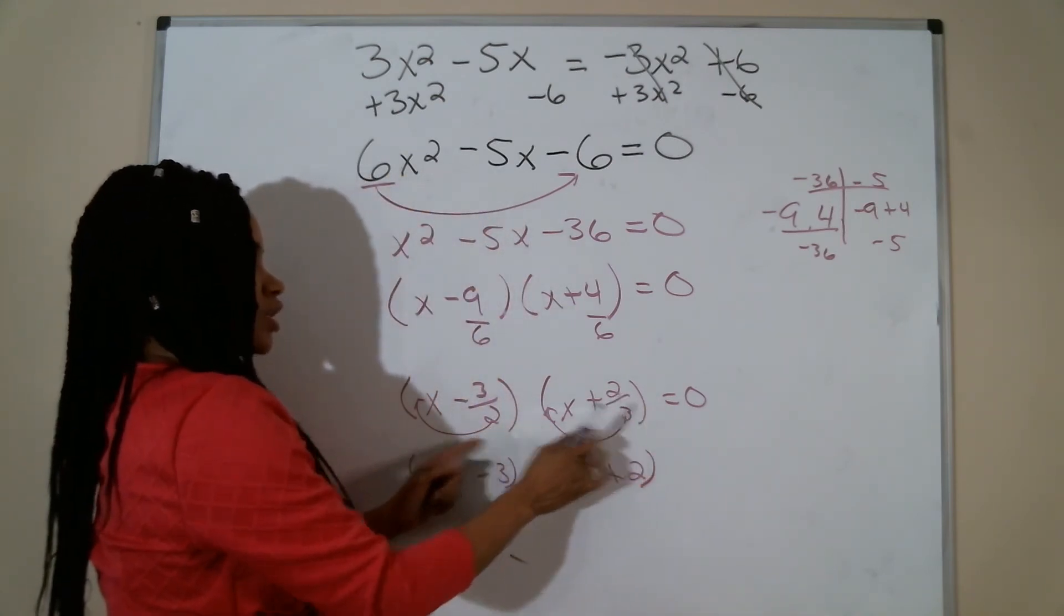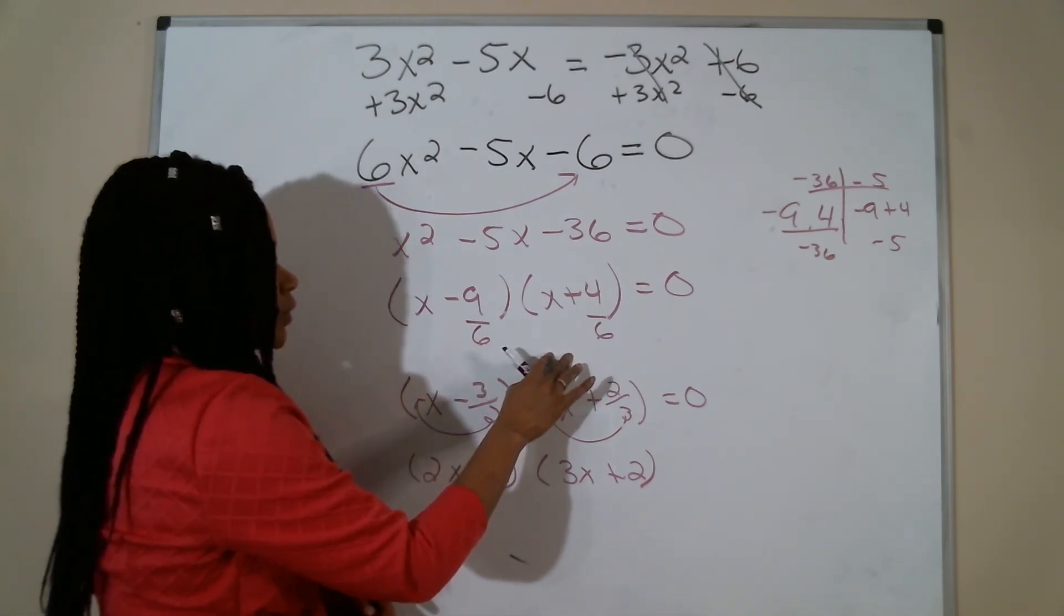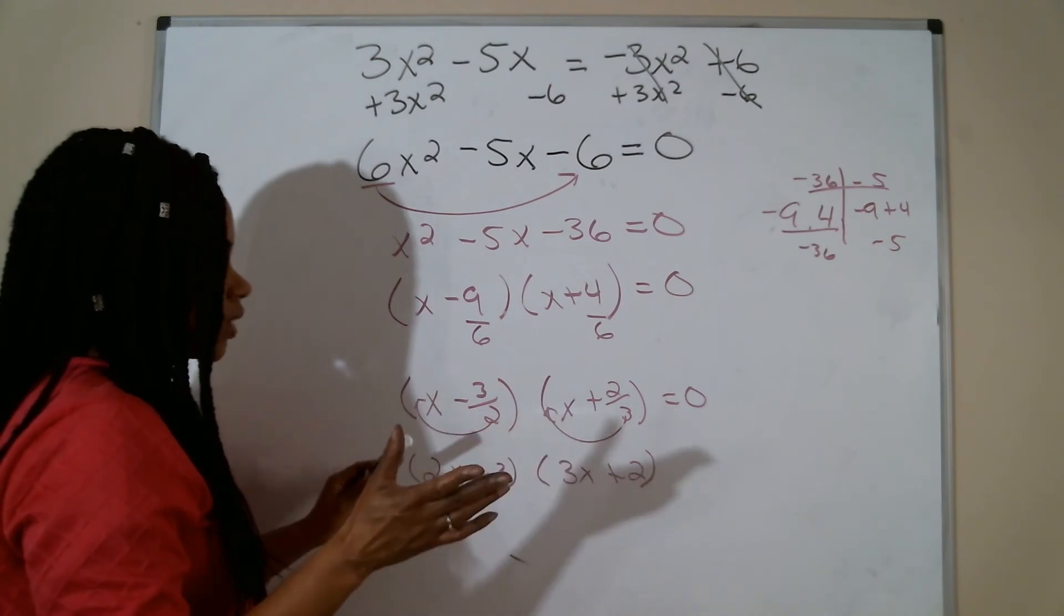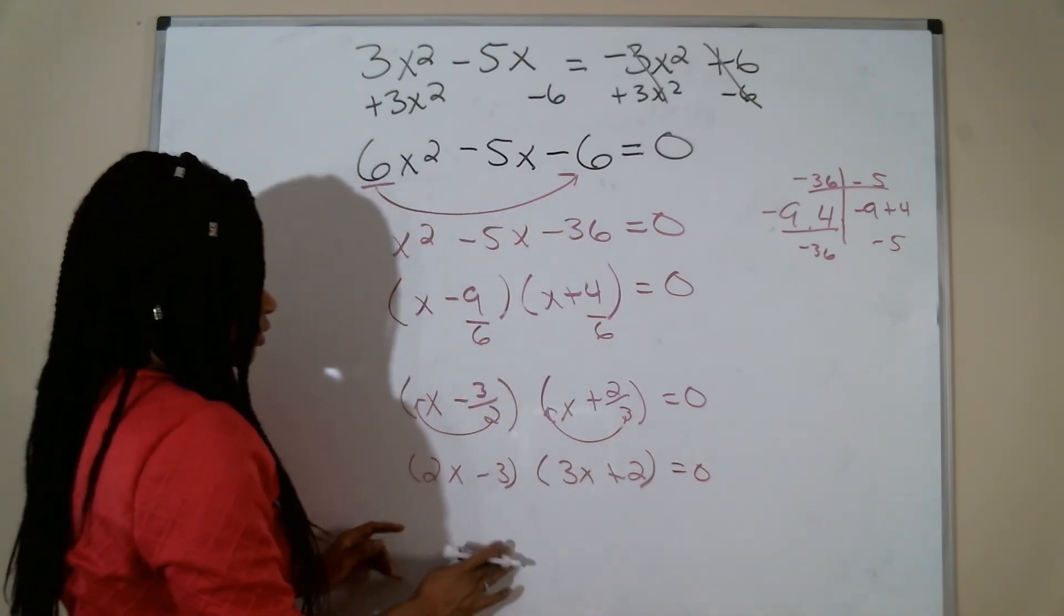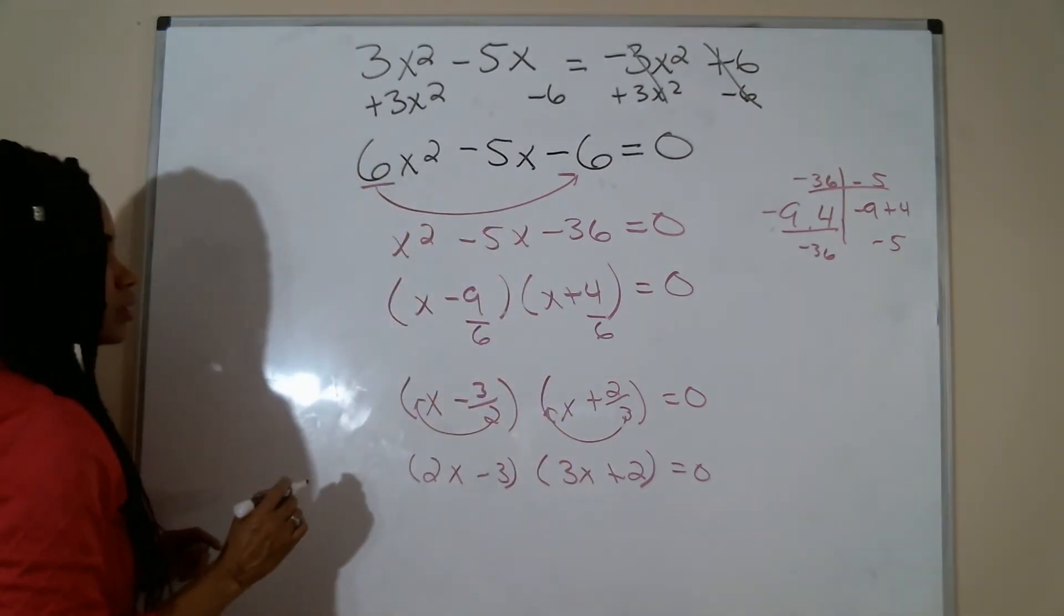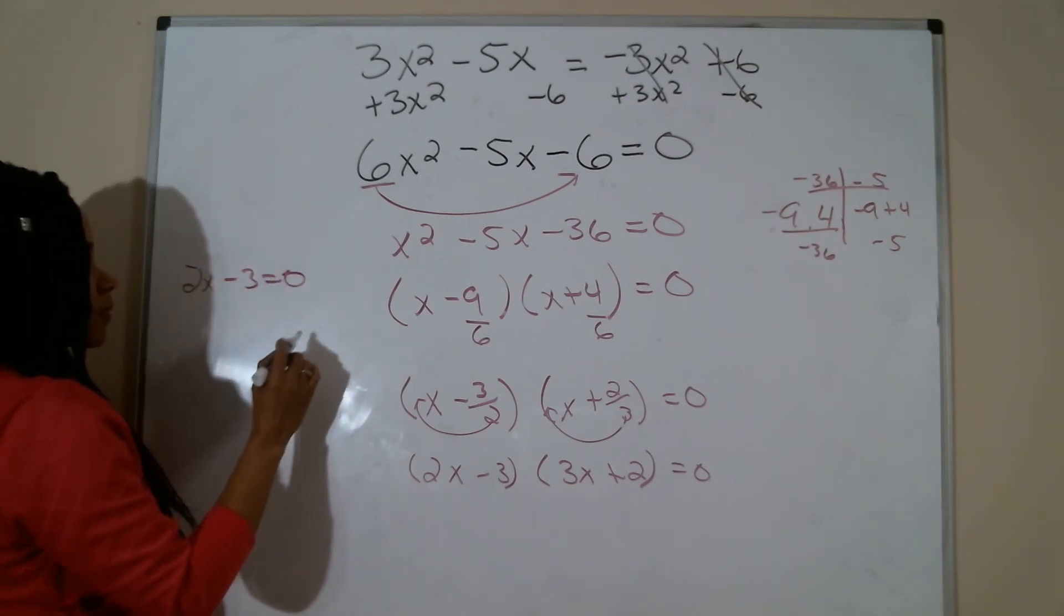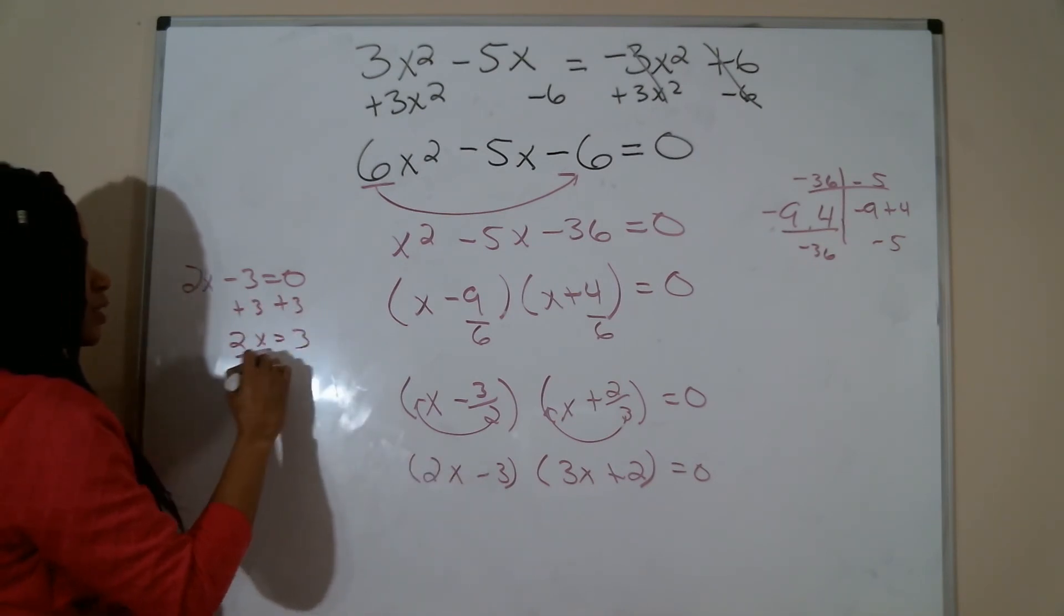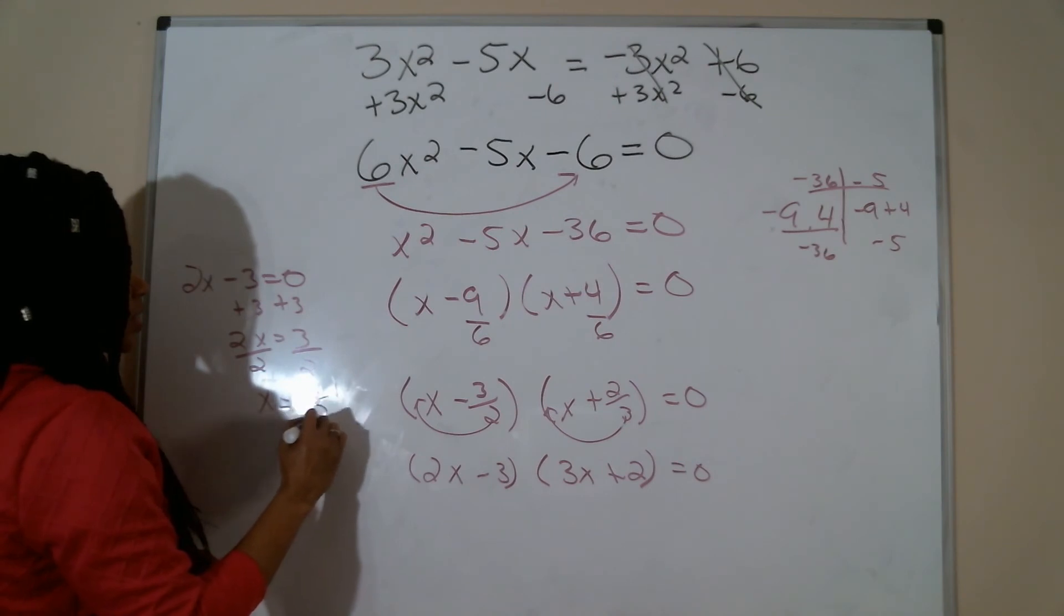So whatever your denominator is, move that to the front. And if you happen to forget to reduce the fraction, you still should get the same thing. It's always easier to go ahead and reduce first. So setting this part equal to 0, 2x minus 3 is equal to 0. So that would be plus 3. 2x is equal to 3. Divide by 2. So my first one is x is positive 3 over 2.